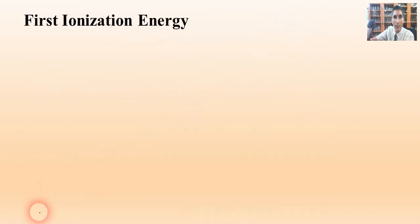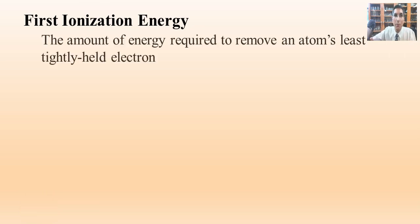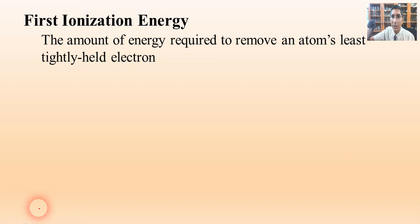Let's take a look at another periodic trend we've learned about: first ionization energy. That's the amount of energy required to remove an atom's least tightly held electron — a valence electron.